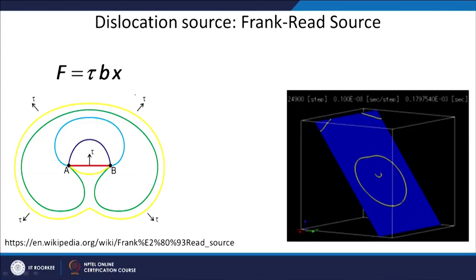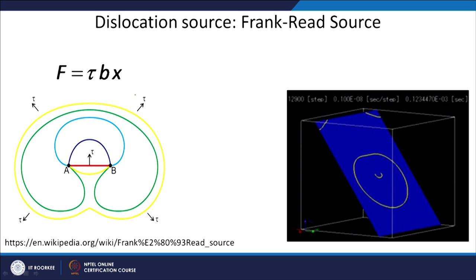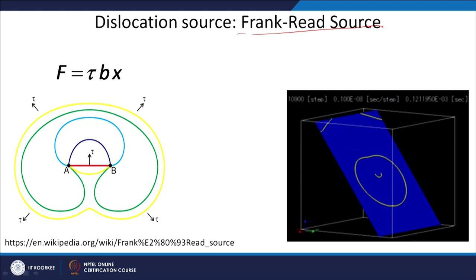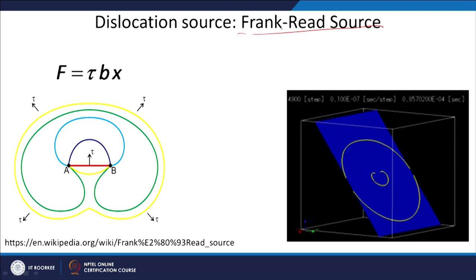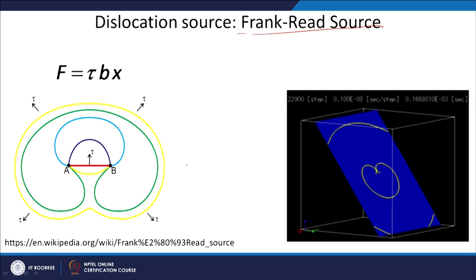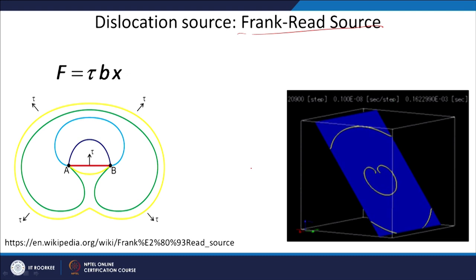Since plastic deformation requires dislocation motion, and more deformation requires more dislocations, there must be a source generating dislocations during deformation. Grain boundaries can act as sources, but the most important source is the Frank-Reed source — proposed almost simultaneously by two scientists, Frank and Reed.